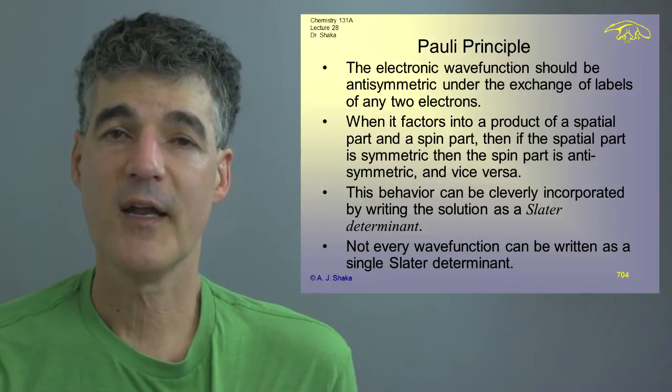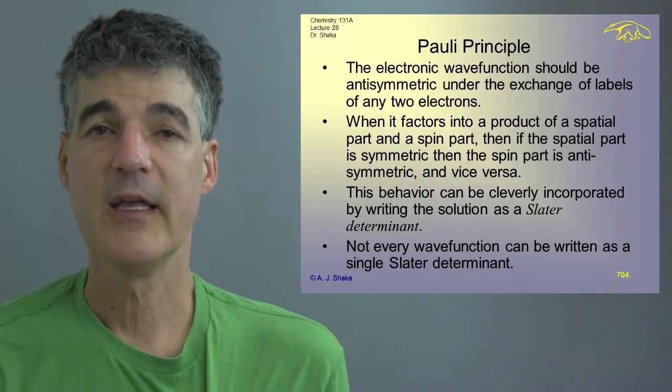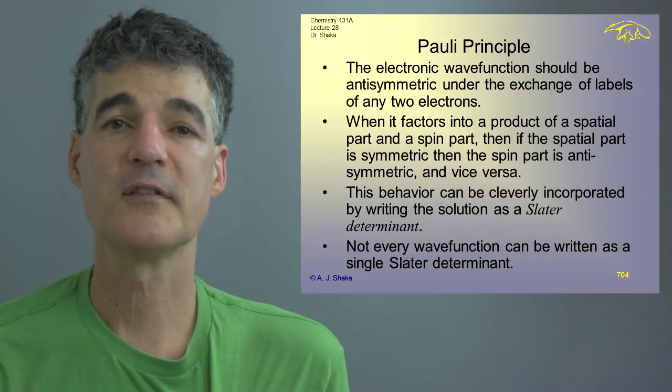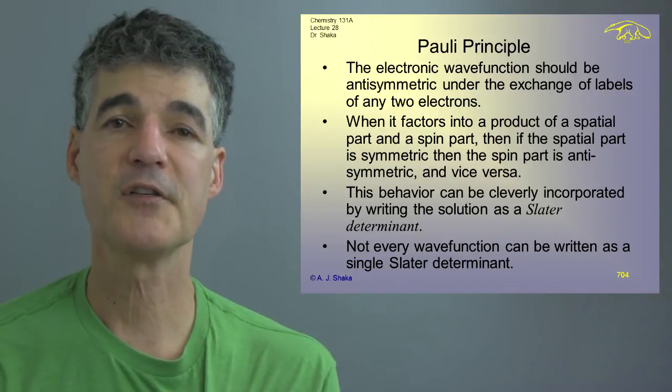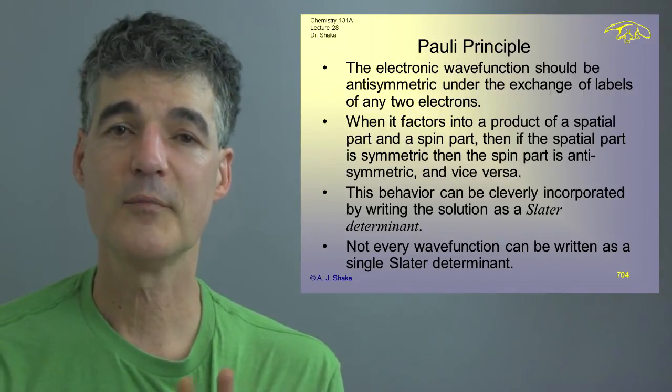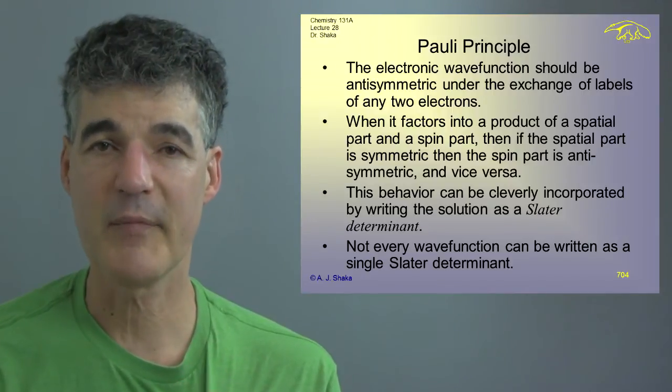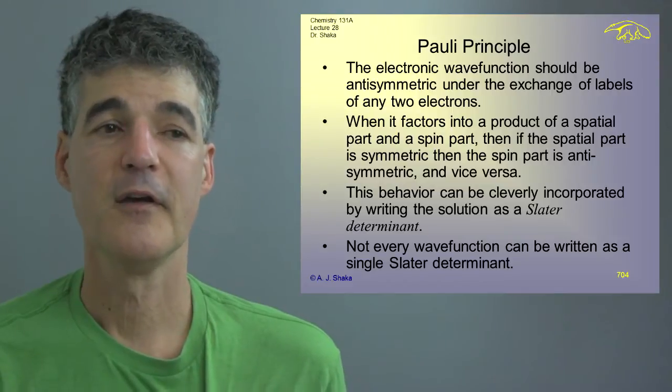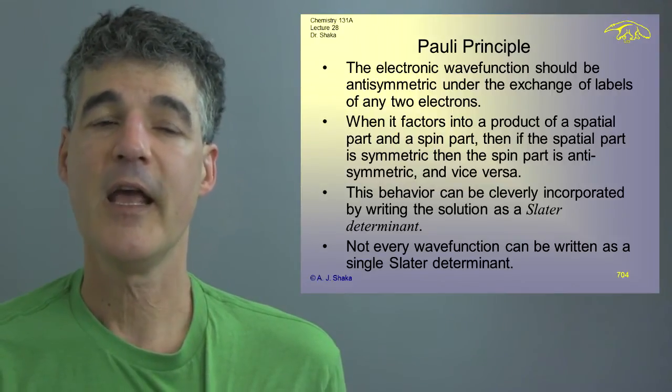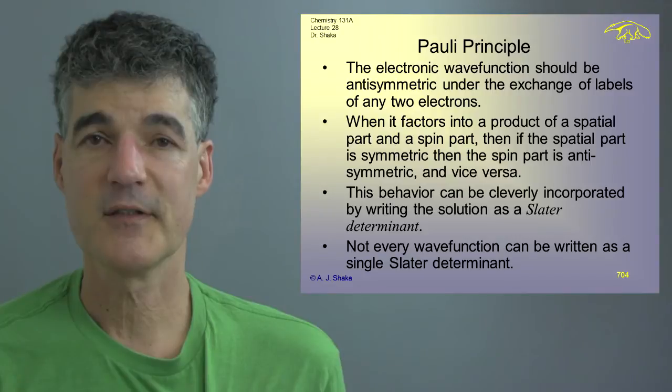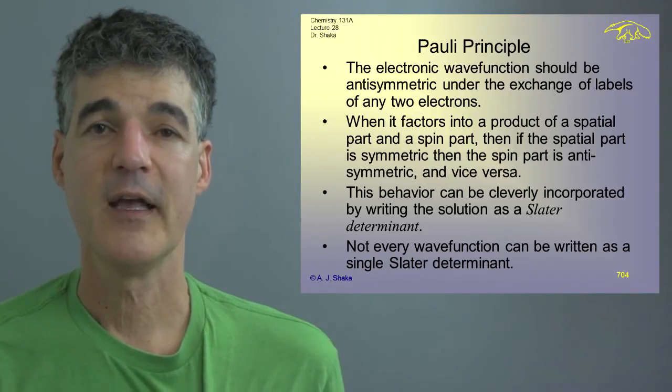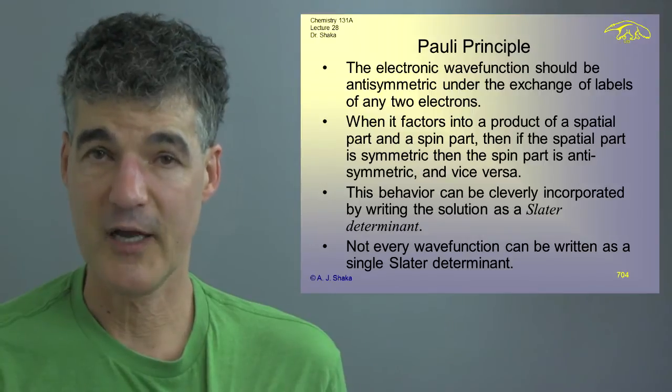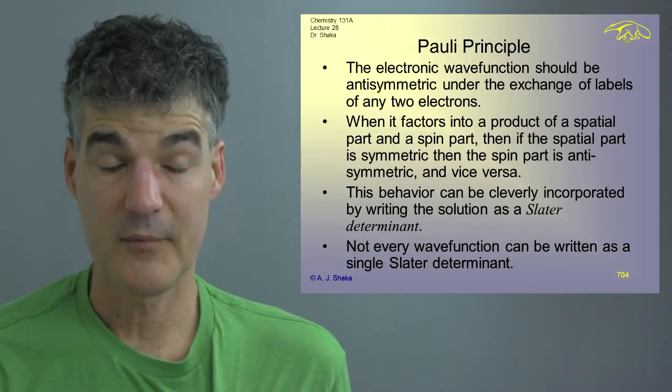This behavior we decided could be encoded in this neat device called a Slater determinant because a Slater determinant when you change columns or rows in a determinant, it changes sign automatically and so it actually keeps track of this property for you. Not every wave function can be written as a single Slater determinant and that's one reason why we didn't do a lot with open shell atoms and things like that that could be more complicated.